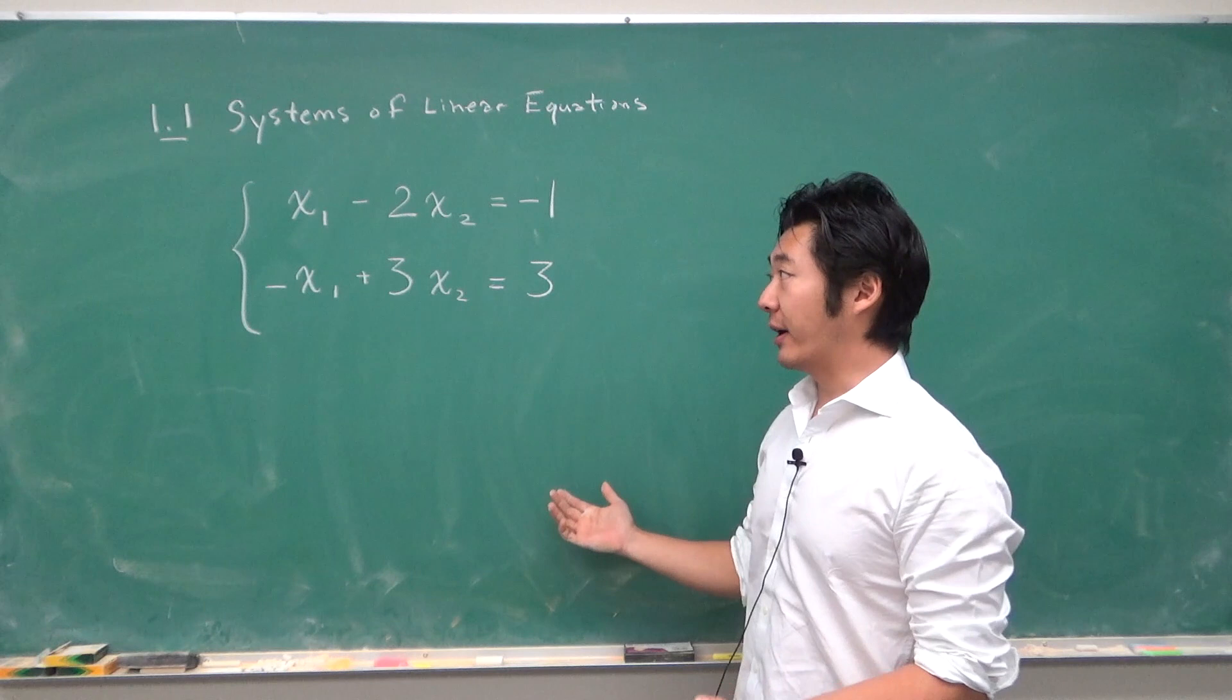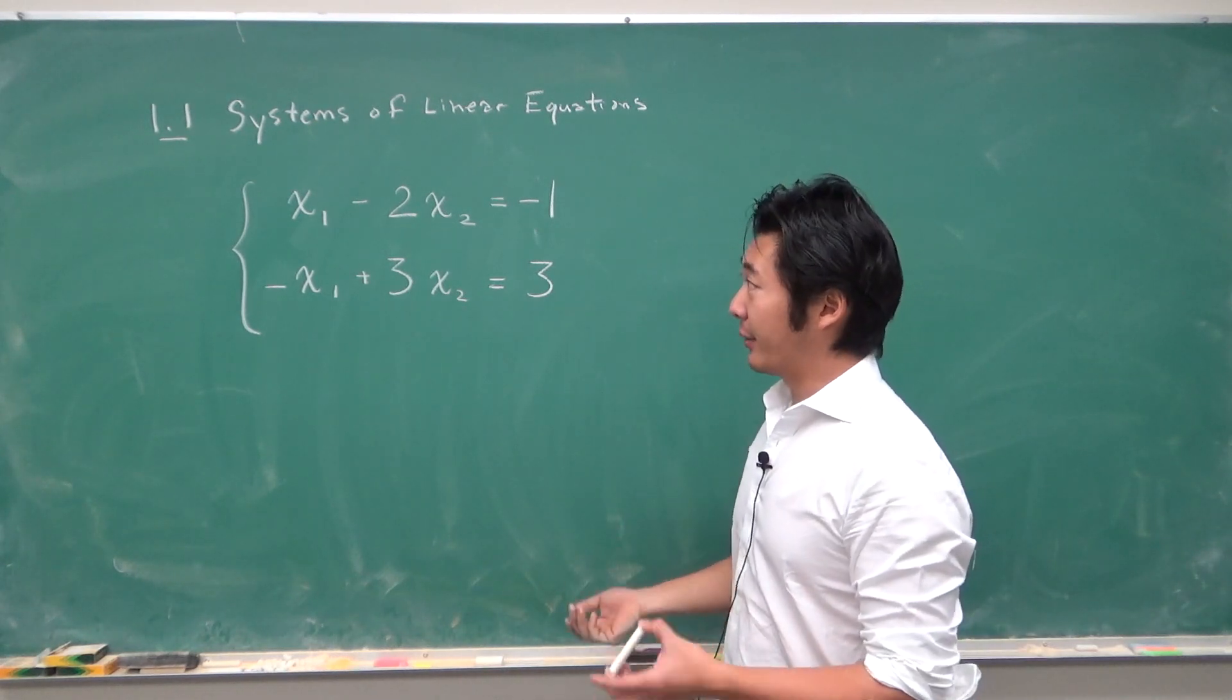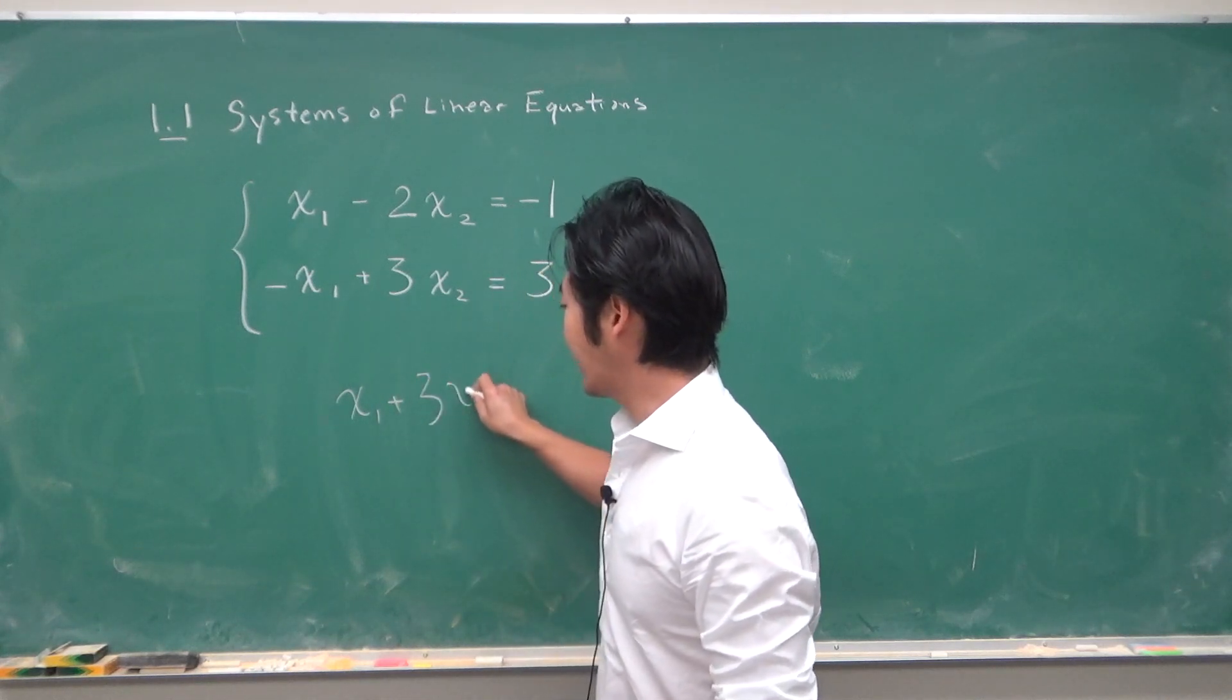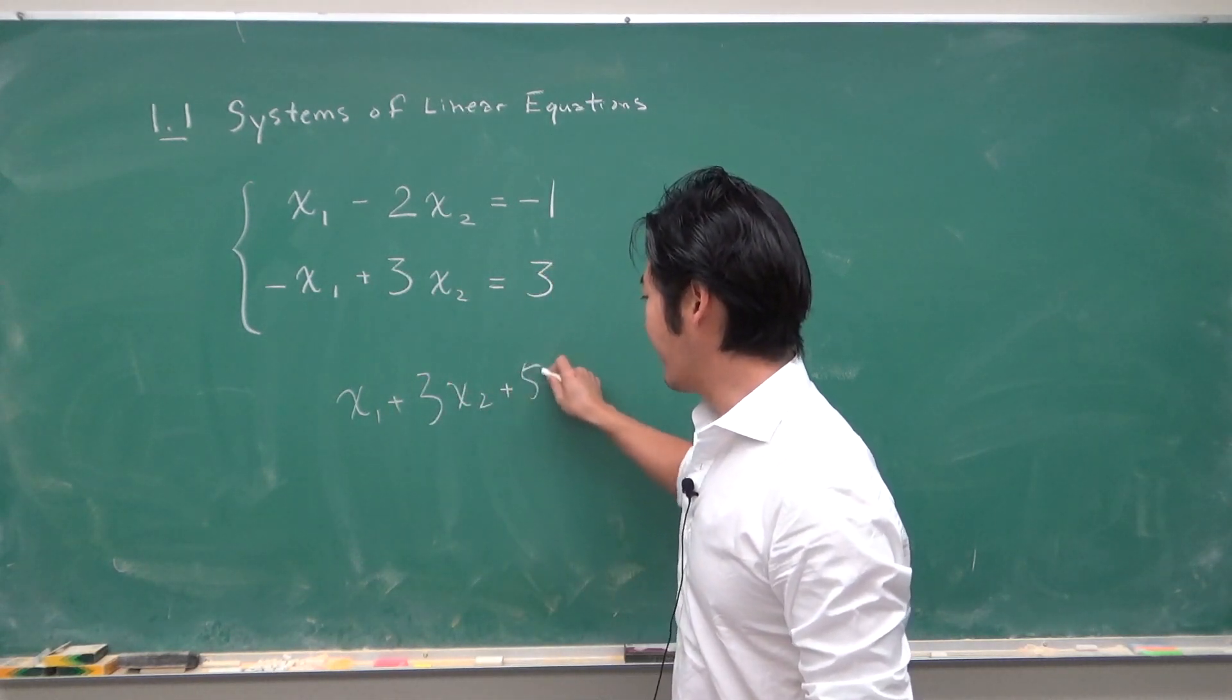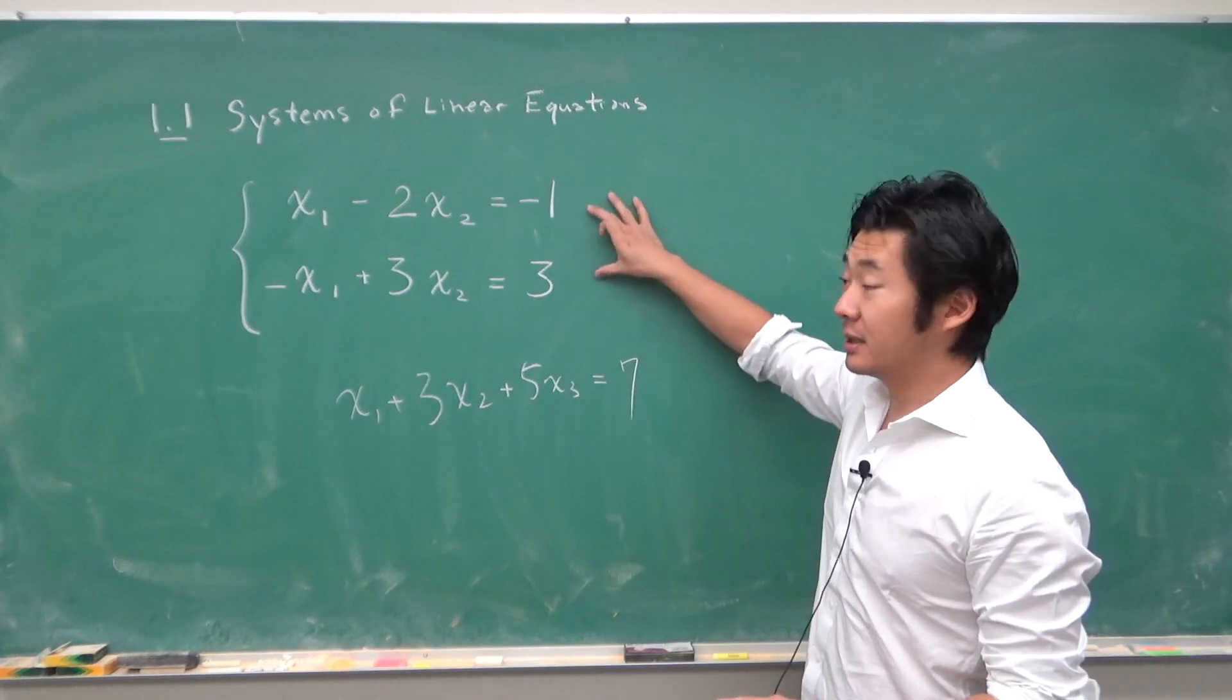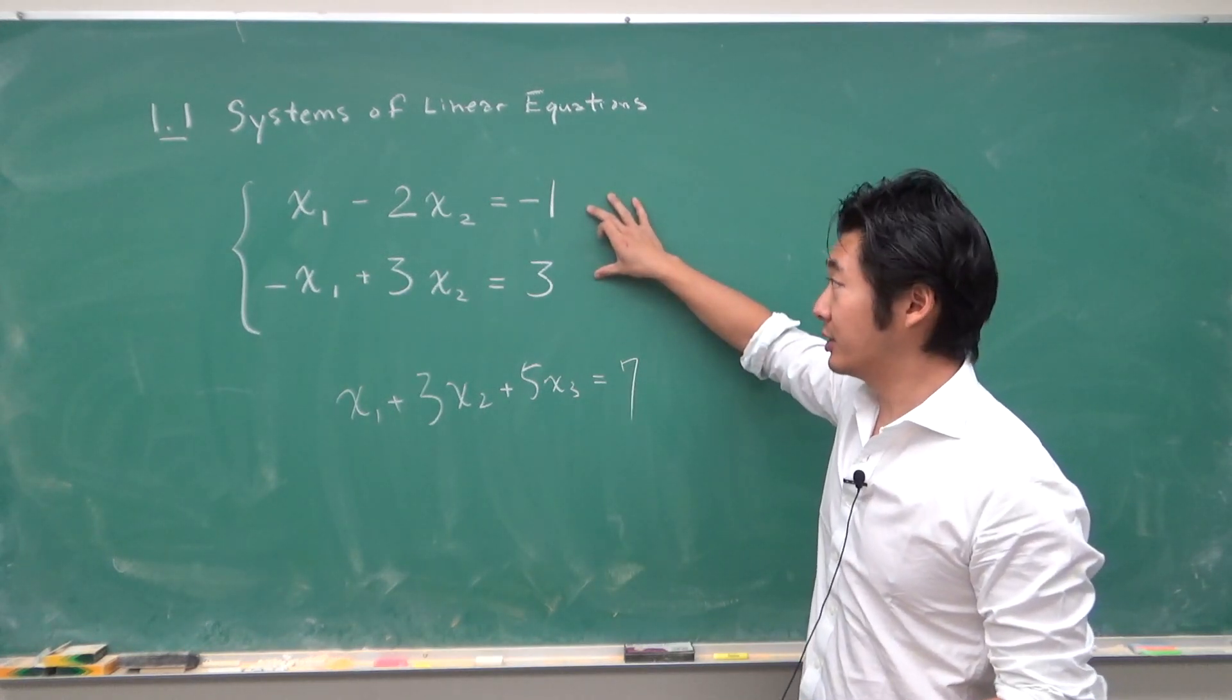There could be more than two variables for a linear equation. It could be something like x1 plus 3x2 plus 5x3 equals something seven. But in this first case I will start off with just two variables.